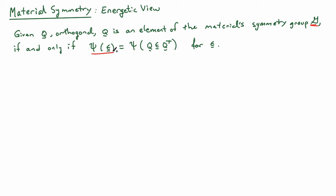In other words, the free energy for a strain epsilon is equal to the free energy when I pre and post multiply that same epsilon by Q, an element of my symmetry group.